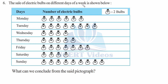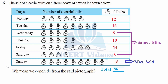Question 6: The sale of electric bulbs on different days of a week is shown in a pictogram. Remember: each picture represents 2 bulbs. The question asks: what conclusions can we draw from this pictogram? We will identify several conclusions.